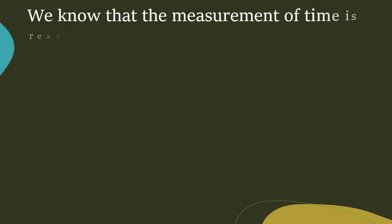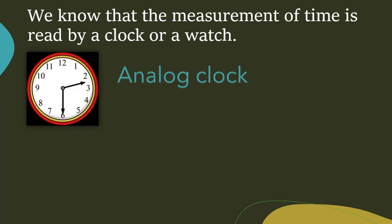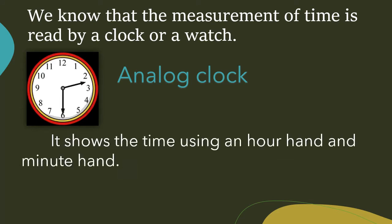We know that the measurement of time is read by a clock or watch. We can use an analog clock. An analog clock shows the time using an hour hand and minute hand.